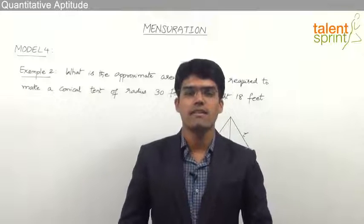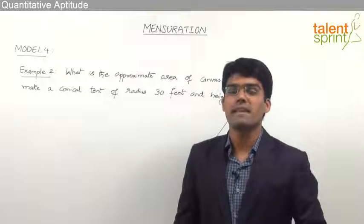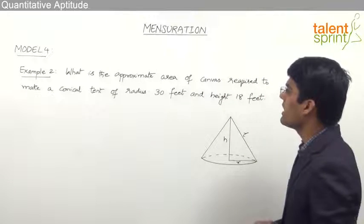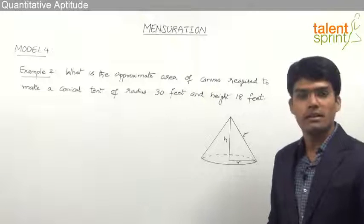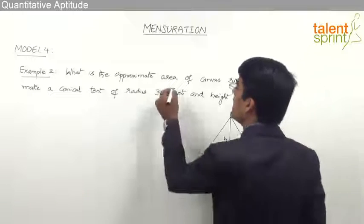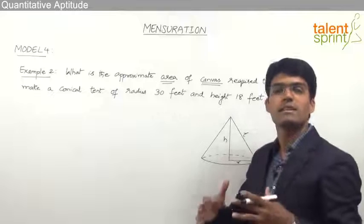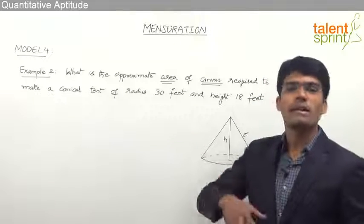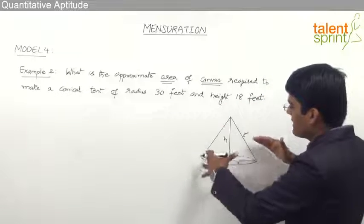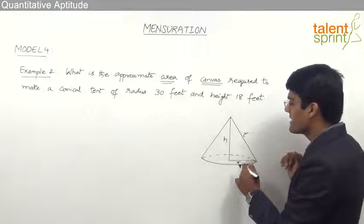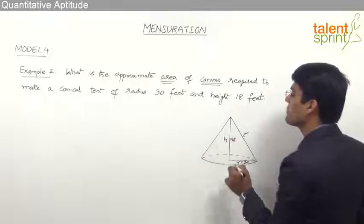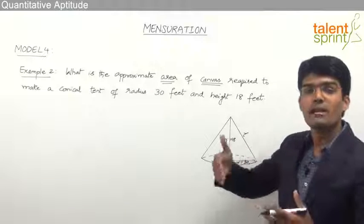Let us now take another example from Model 4, based on the surface area of a three-dimensional geometric shape. The question is: what is the approximate area of the canvas required to make a conical tent of radius 30 feet and height 18 feet? The canvas is the cloth used to make the conical tent, with radius 30 feet and height 18 feet, and we need to find how much canvas cloth is required.